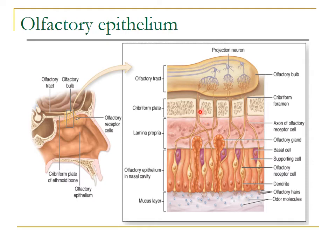Twenty to thirty smaller olfactory nerves pass through the cribriform plate and reach the olfactory bulb in the cranial cavity, where they synapse. The olfactory neurons are actually first-order neurons. From the olfactory bulb, projection neurons pass the sensation of olfaction through the olfactory tract to the olfactory area.